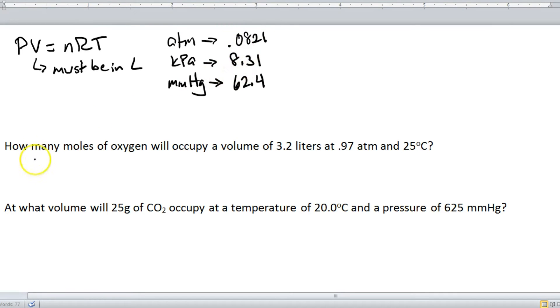Let's take a look at a few examples. How many moles of oxygen will occupy a volume of 3.2 liters at .97 ATM and 25 degrees Celsius? Our equation is PV equals nRT. Let's start with pressure, that's .97 ATM, so .97. Volume, 3.2. Moles, well that's what the question is asking for, so I'm going to put in an n. R, so that's our ideal gas constant. Pressure is being measured in ATM, so we're going to use .0821. And then our temperature, which here it's given to us in Celsius, but remember, temperature must be in Kelvin, so we have to add 273 to get 298.